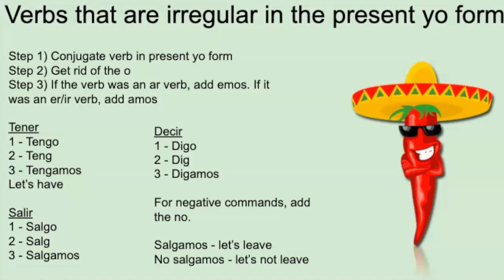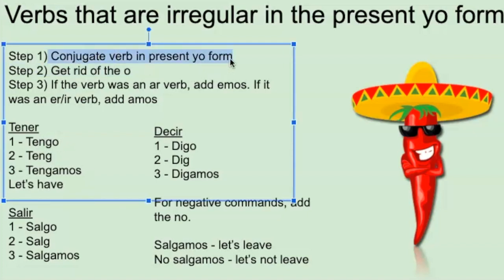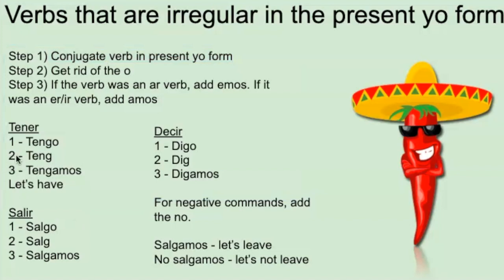Now here are verbs that are irregular in the present tense yo form. So 'tener' is 'tengo,' 'decir' is 'digo,' 'salir' is 'salgo.' The way you do it: you conjugate the verb in the yo form, get rid of the -o, and then add -emos if it's AR, or -amos if it's ER or IR. So for 'tener,' you have 'tengo' — that's the present tense yo form — get rid of the o, then add -amos because it's ER. Result: 'tengamos' — 'let's have.'